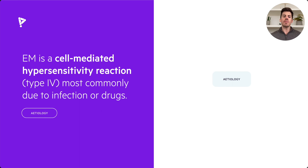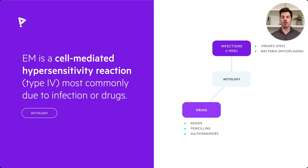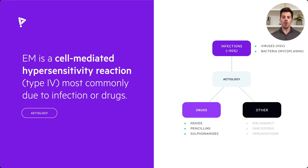Thinking about the causes of Erythema Multiforme, around 90% are infections such as viruses like herpes simplex virus or bacteria such as mycoplasma. It may be due to drugs such as NSAIDs, penicillins, or sulfonamides. Or it may be due to other causes such as malignancy, sarcoidosis, or even immunizations.